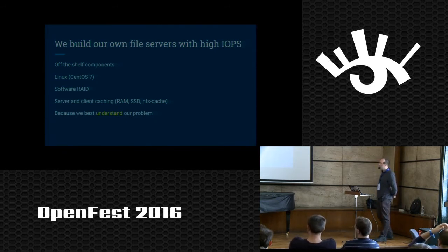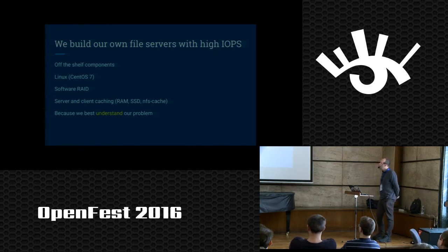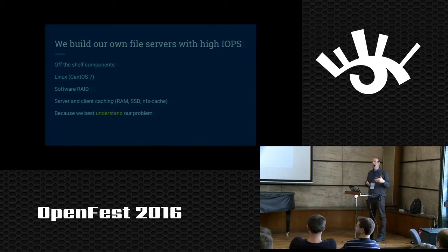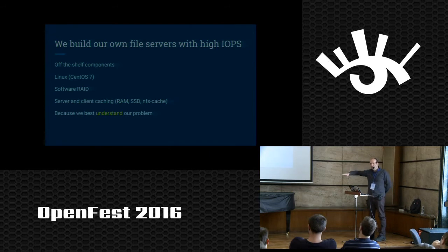We use a lot of server and client caching to get this data to the artists. Without caching our file servers would be almost dead. We use RAM as the primary cache — it's read-only. Then we have SSD caching, used for both read and write. And then we use NFS cache — that caches files on the clients. If they read once from the file server, those files are cached locally, and when they try to re-read them, if the files haven't changed, it won't re-read from the server. When we put NFS caching on the clients, the server load went down significantly.